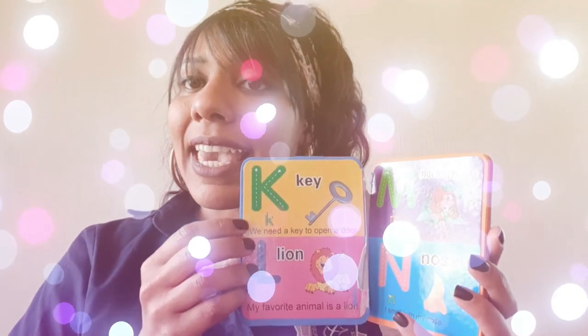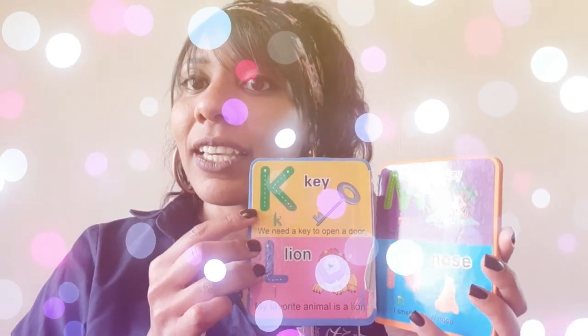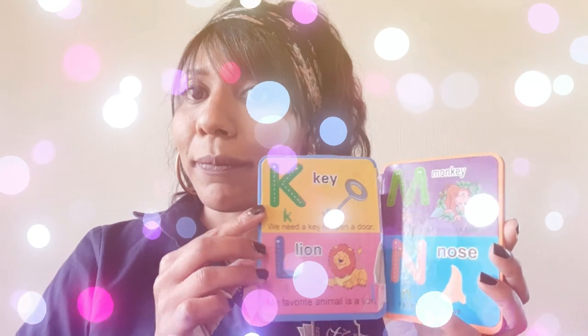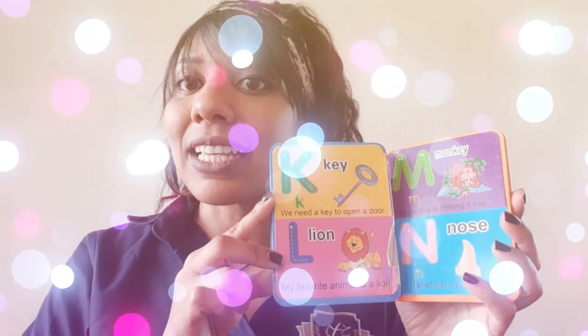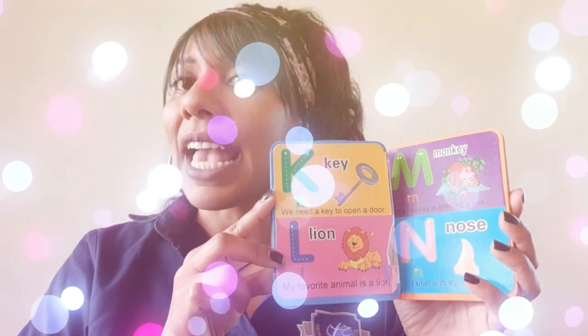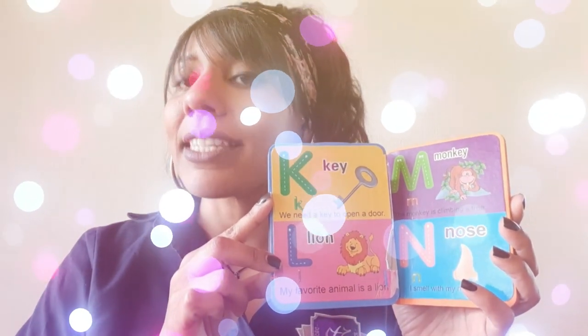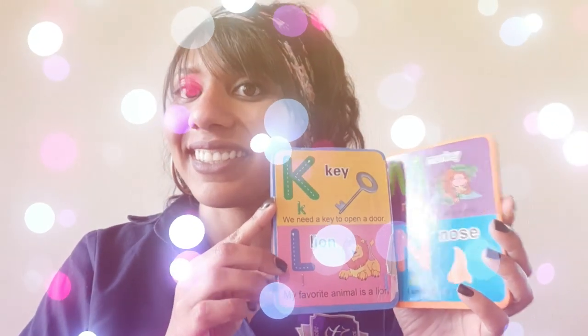K is for key. We need a key to open a door. L is for lion. My favorite animal is a lion.